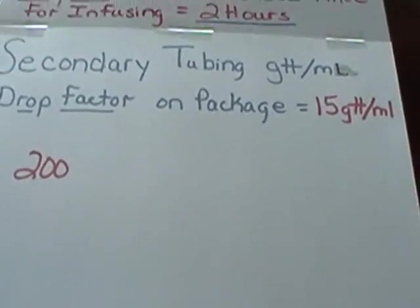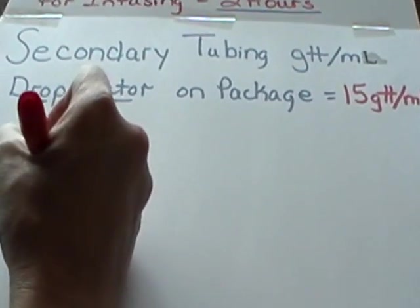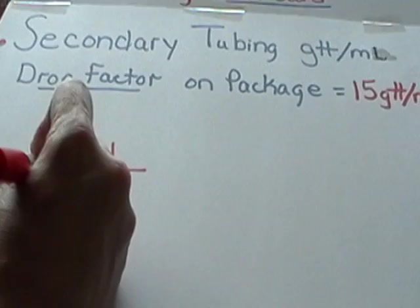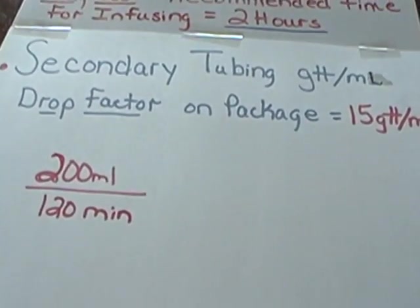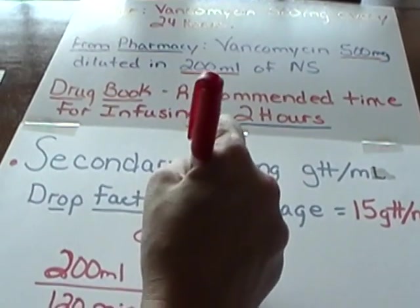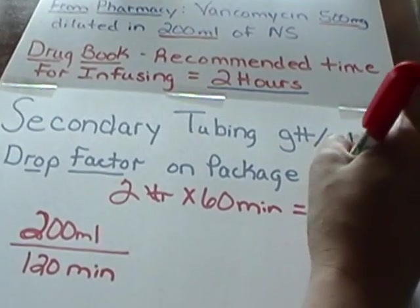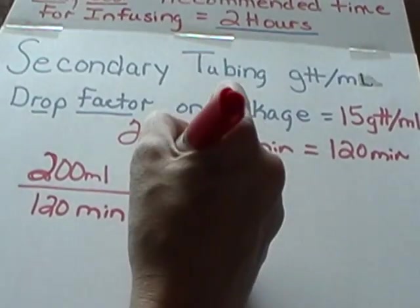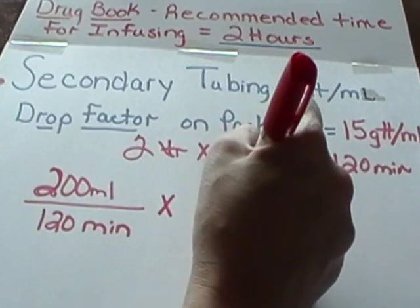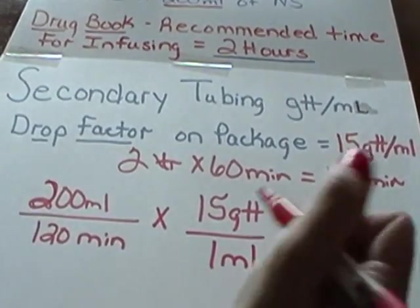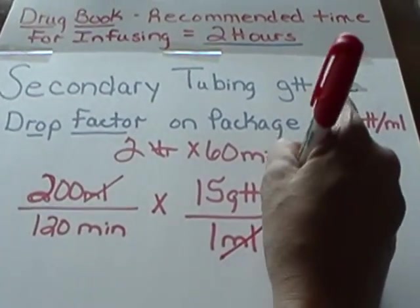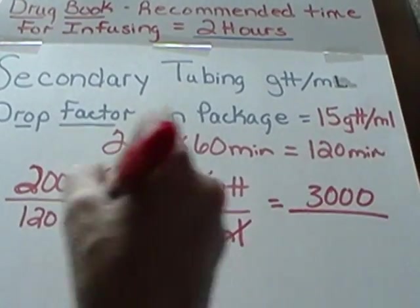Now let's work the problem. We put our volume, 200 milliliters, as our numerator over the number of minutes. Two hours times 60 minutes equals 120 minutes, so our denominator is 120 minutes. We then plug in our drop factor: 15 drops per 1 milliliter. The milliliters cancel each other out, and we're left with 200 times 15 equals 3000, divided by 120.